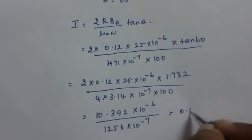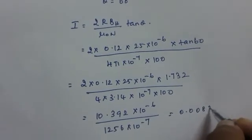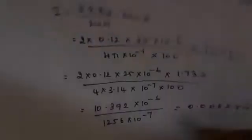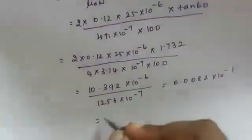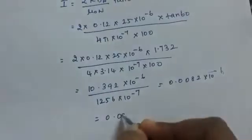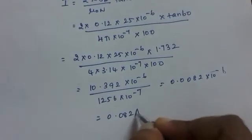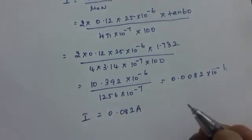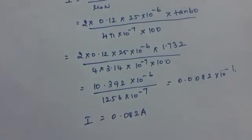Dividing one by the other, you will be getting it as 0.0082 into 10 raised to minus 1. So if you write the value, it is 0.082 ampere. Your current is 0.082 ampere.